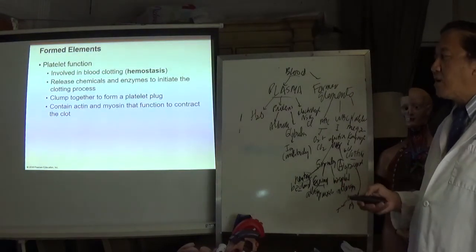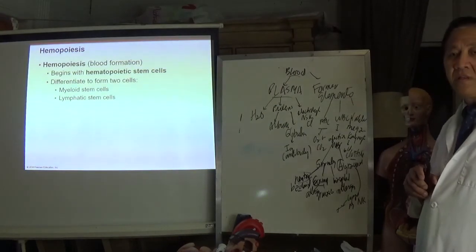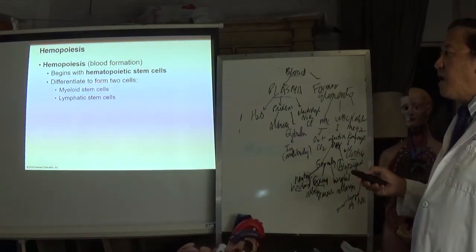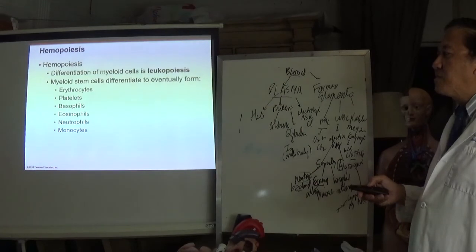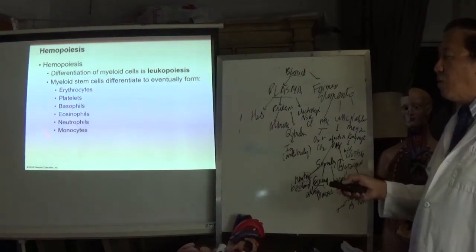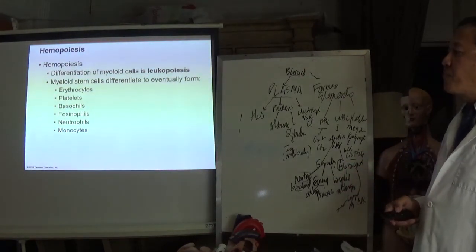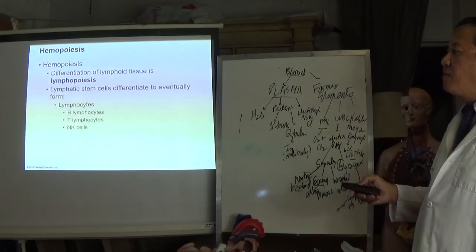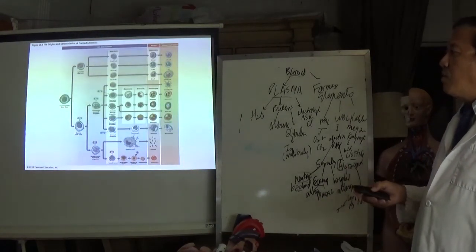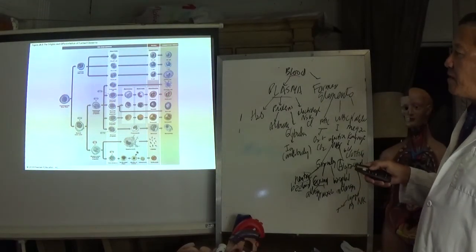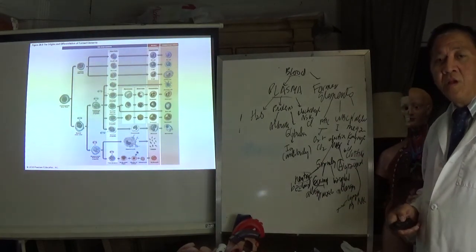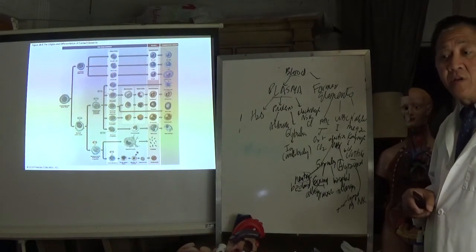Blood formation begins with hematopoietic stem cells, which can be either myeloid or lymphoid stem cells. Myelopoiesis produces erythrocytes, platelets, basophils, and monocytes among others, while lymphopoiesis produces lymphocytes. All formed elements — red blood cells, white blood cells, and platelets — are formed in the red bone marrow.